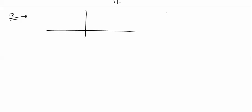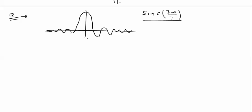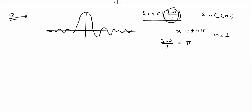Direct question: what is the first zero crossing of sinc(3Ω/7)? For the first zero crossing, the argument of the sinc function, X, should be equal to nπ (plus or minus). So we set 3Ω/7 equal to π, giving us the first zero crossing condition.